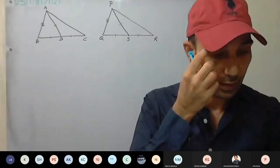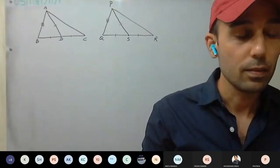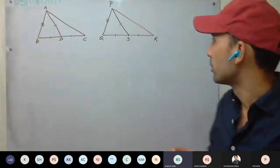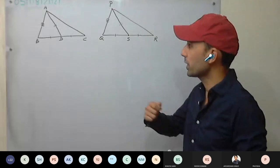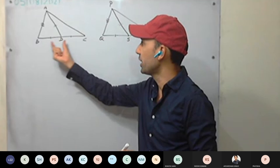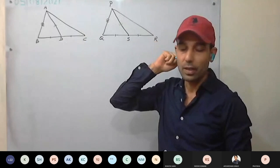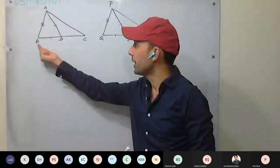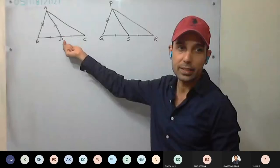A student asks: how we got QS equal to SR? How we got QS equal to SR? What is written? AD is what here? For example, how did you get BD equal to DC? AD is the median of triangle ABC. A D is the median. And what does median mean?